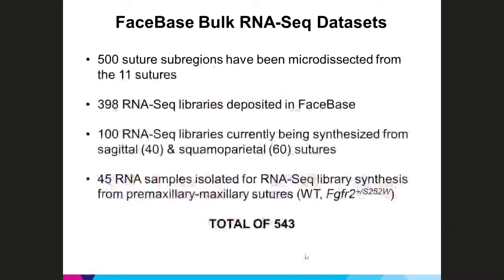In summary, 500 suture sub-regions have been dissected from 11 sutures to generate RNA-seq libraries, and nearly 400 from the eight sutures shown are deposited in FaceSpace. Another 100 RNA-seq libraries comprising the sagittal and squamous parietal sutures are currently being synthesized, and RNA has been isolated from 45 of the 60 suture sub-regions for the premaxillary-maxillary sutures — totalling 543 RNA samples isolated and/or converted to RNA-seq libraries.